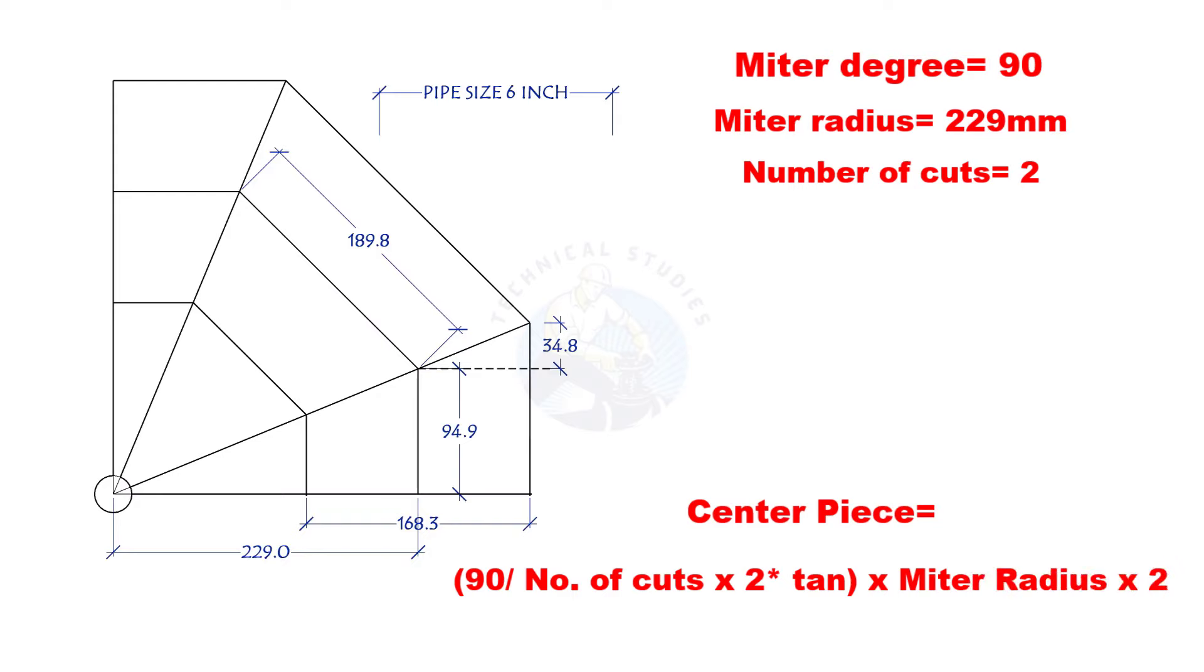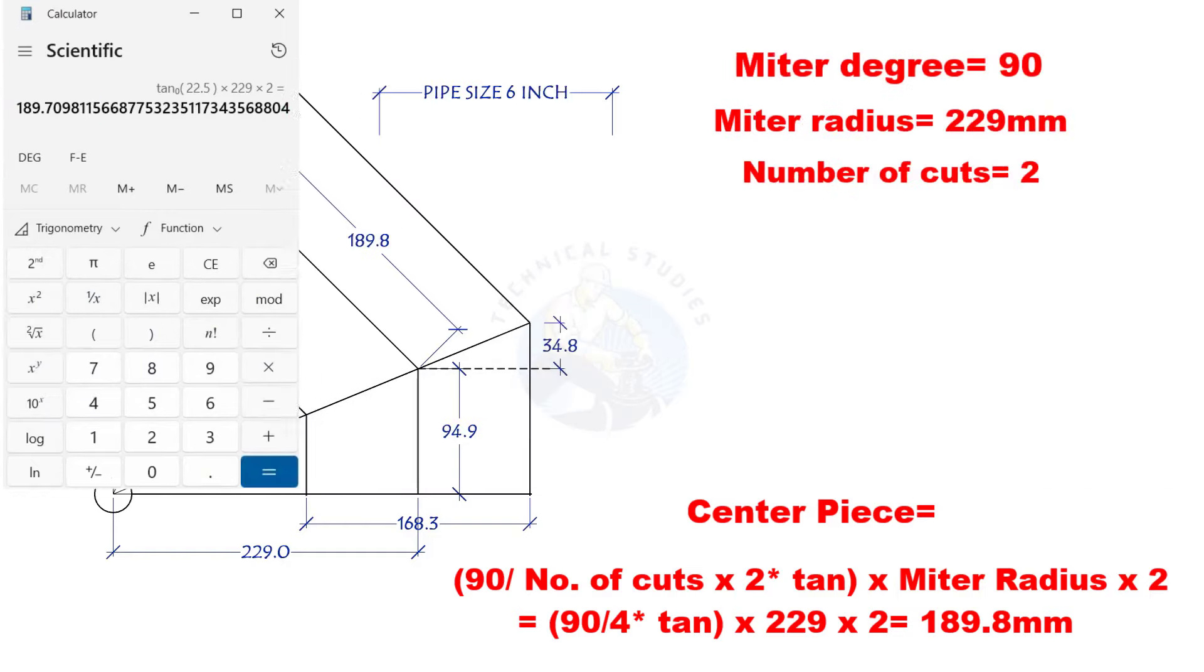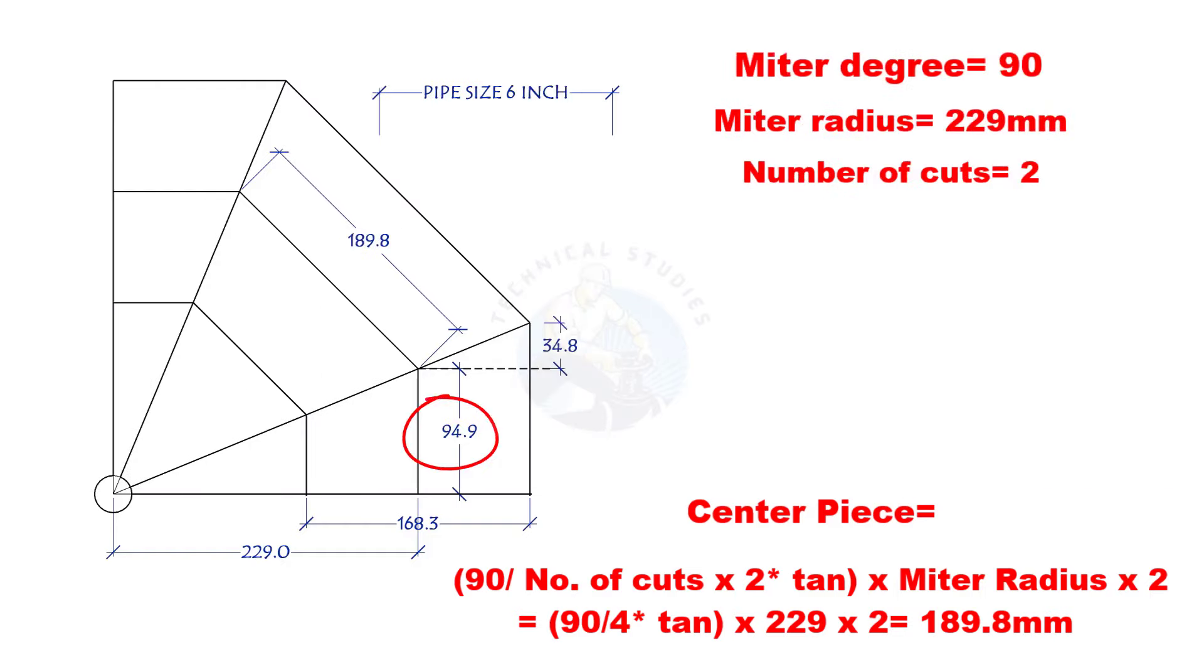90-degree divided by number of cuts into 2 tan multiplied by the mitre radius into 2. That is nearly 189.8 mm. The end piece length is 94.9 mm.